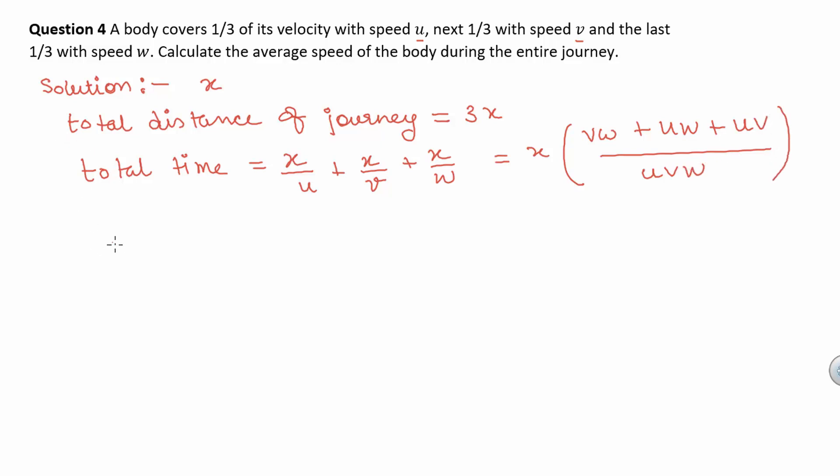Now, average speed equals total distance divided by total time. So, average speed equals 3x divided by x times the quantity vw plus uw plus uv over uvw.